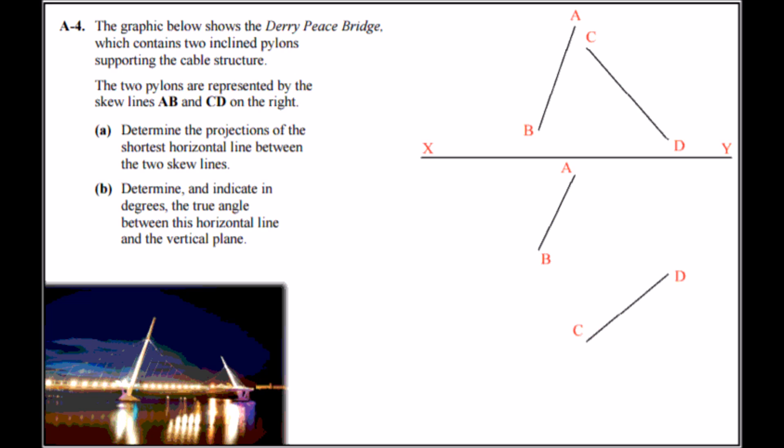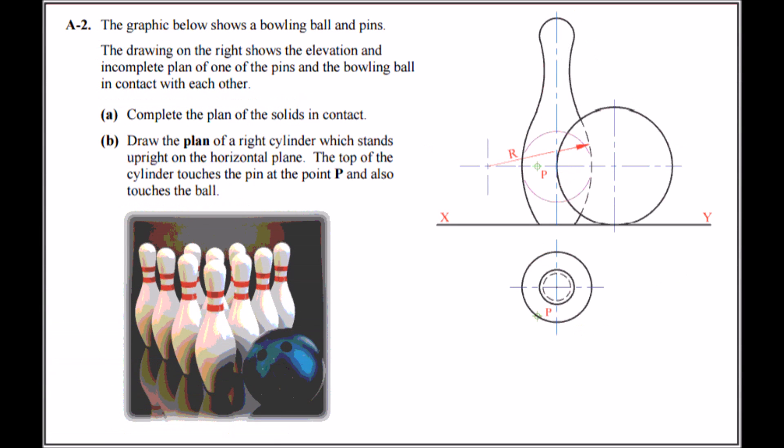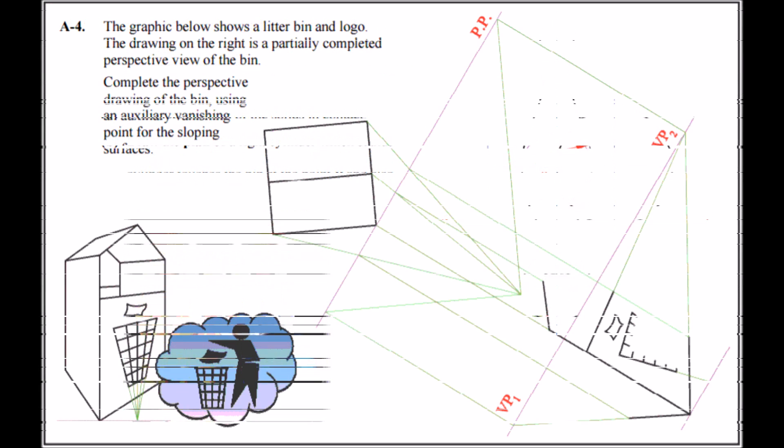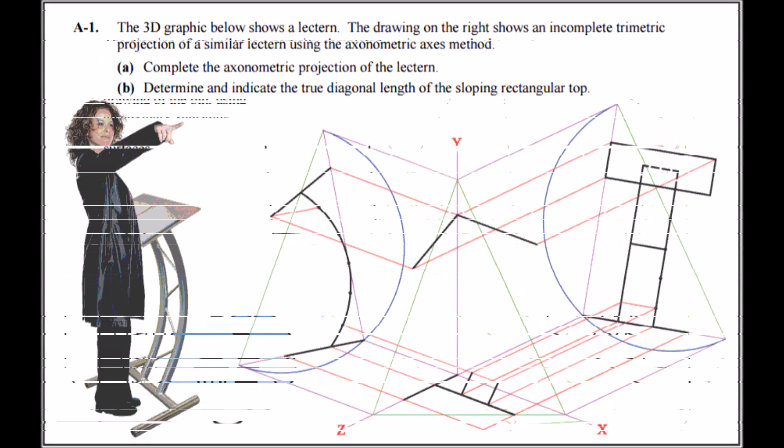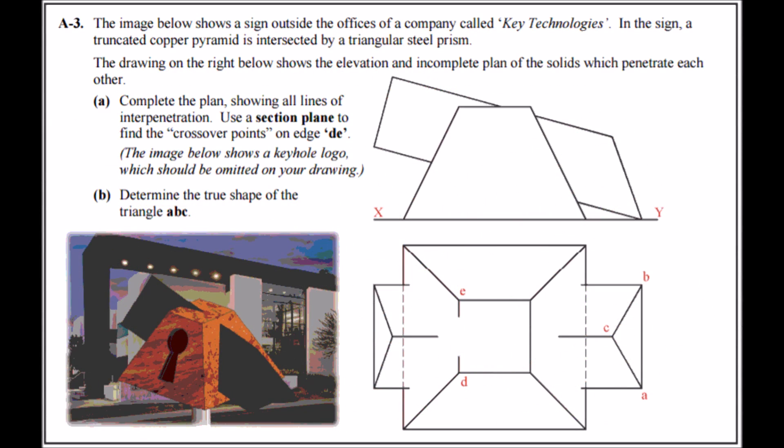More on the other ones, solids and contact again hasn't come up in a while, or perspective as a short question. And also intersections. And I'm kind of looking at intersections for Part B as well. So there could be a possibility it'll come up in Section A and Section B. Also then, axonometric, because again it hasn't come up as a short question in a while.